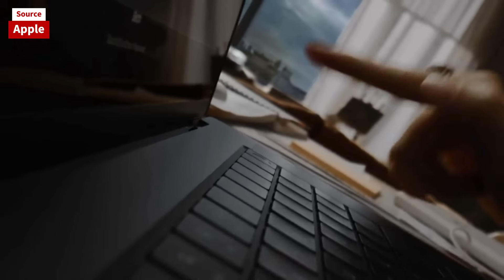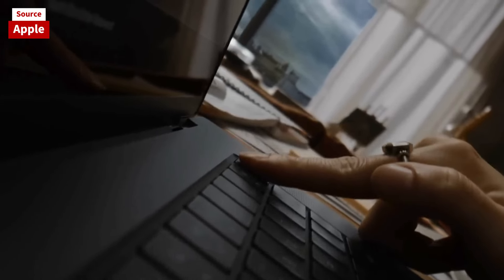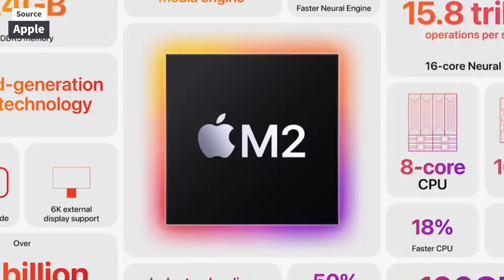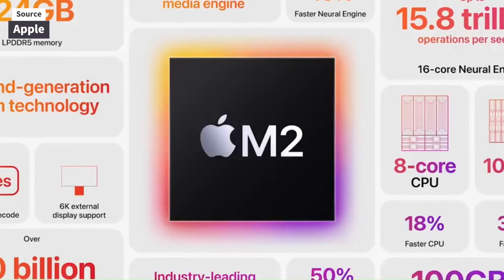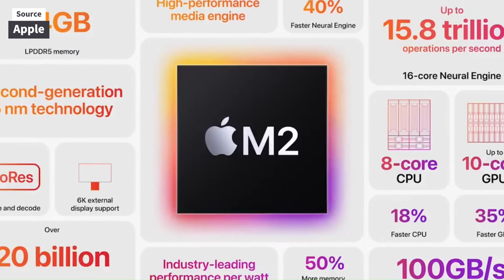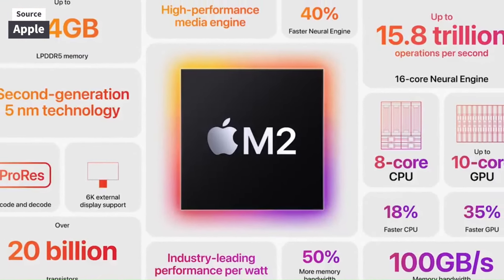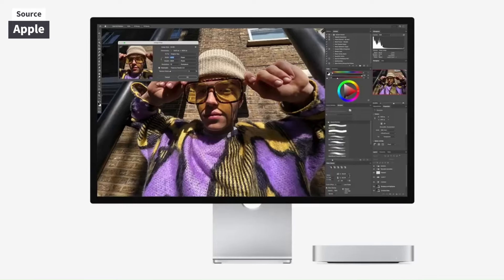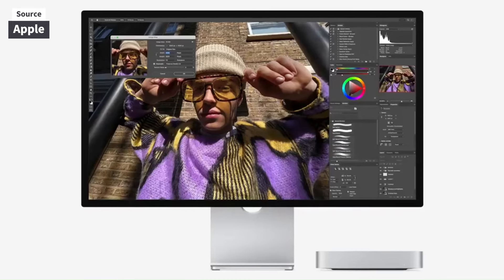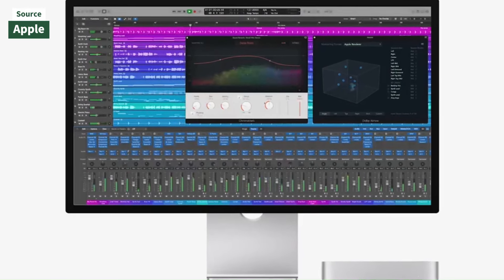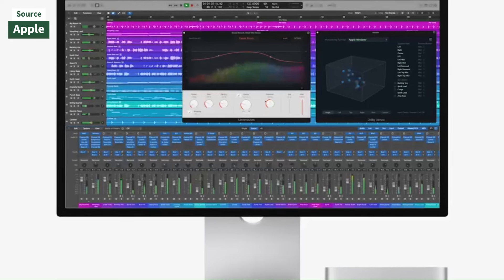Despite the price difference, their internal specs remain nearly identical. Both feature the M2 chip, 256GB of storage, and 8GB of RAM. However, the MacBook Air has an 8-core CPU and GPU, while the Mac Mini sports a 10-core GPU.